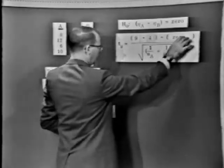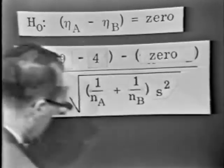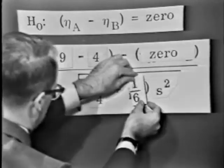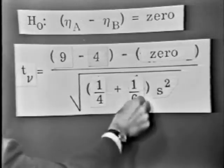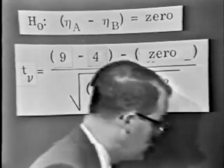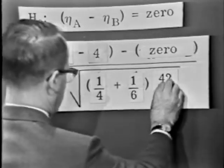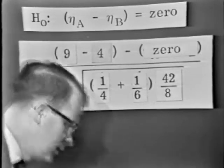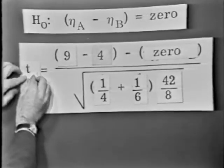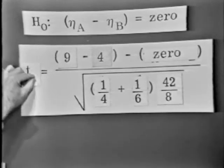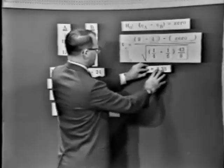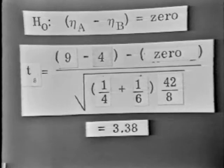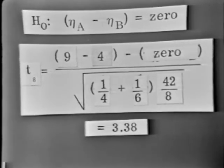There are four and six observations respectively in those averages. S squared, our estimate of the variance, we have to use the pooled estimate of variance, is 42 eighths, 5.25. How many degrees of freedom will this T end up having? Since S squared has eight degrees of freedom, we're dealing with a T with eight degrees of freedom. If you were to turn that crank, you'd find you'd get an observed value of T equal to 3.38. Now the crucial question is, is this an unusual value of T? I have a T with eight degrees of freedom equal to 3.38.